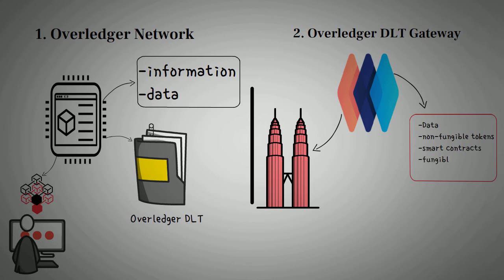One defining attribute of Quant's Overledger DLT gateway is that a smart contract can be written in any programming language, from Hyperledger Fabric to Ethereum.